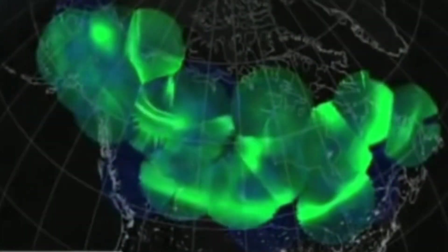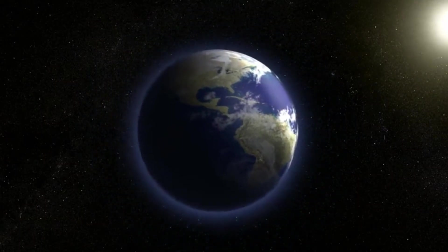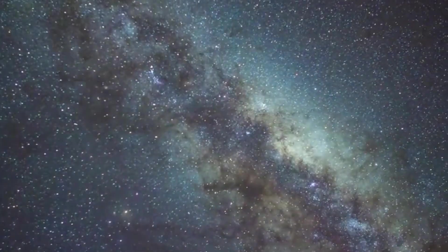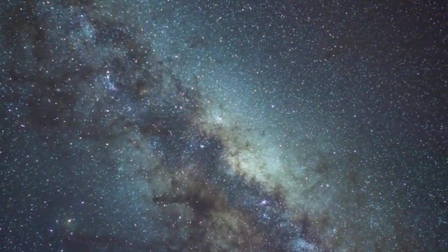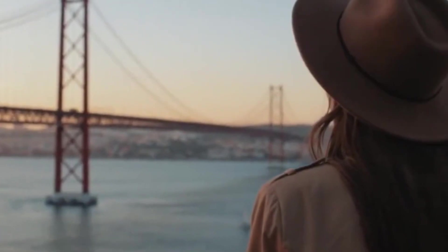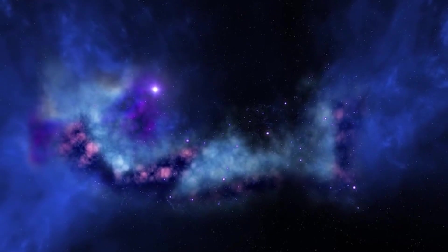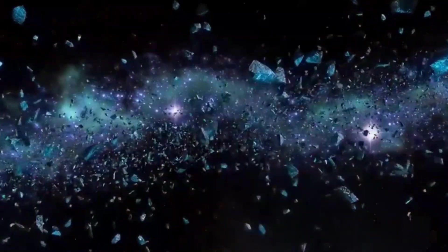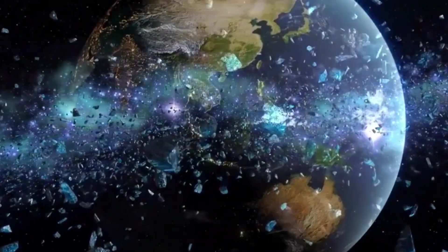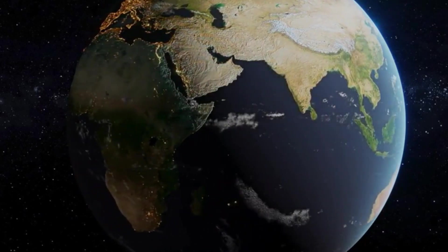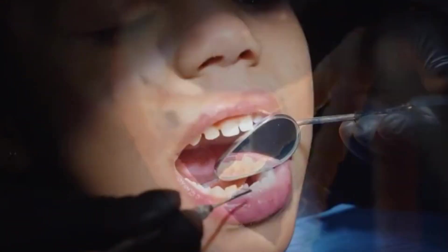Our ancestors lived through past magnetic flips, but they did so without power grids, satellites, or airplanes. For them, the changes in Earth's invisible shield passed largely unnoticed. Their world was simpler, less dependent on fragile technology. For us, it's a completely different story. Every piece of our daily lives—GPS on our phones, planes flying across continents, the satellites guiding our communication, even the stability of our power supply—depends on the steady guidance of Earth's magnetic field. Now imagine that field beginning to weaken dramatically.